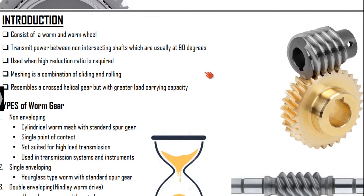The meshing is a combination — when the worm engages with the wheel, that process involves both sliding and rolling of the pair. The worm slides over the wheel, and there is also a rolling action happening. Looking at the figure of a worm and worm wheel, it has close resemblance with the crossed helical gear. But comparing with the crossed helical gear, the load carrying capacity and torque transmitting capacity is very much higher.